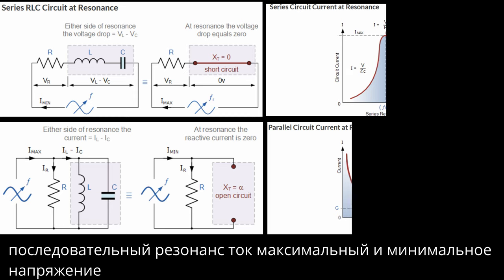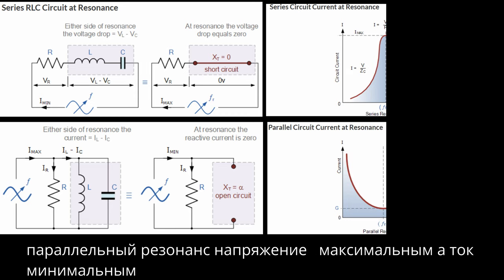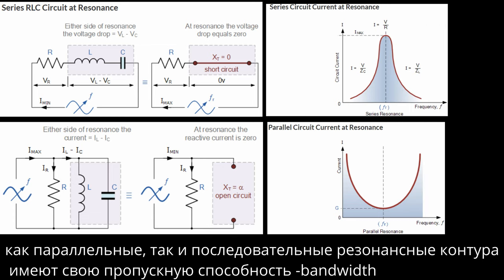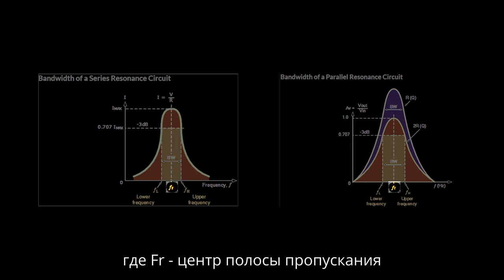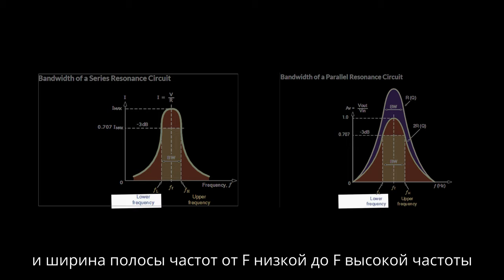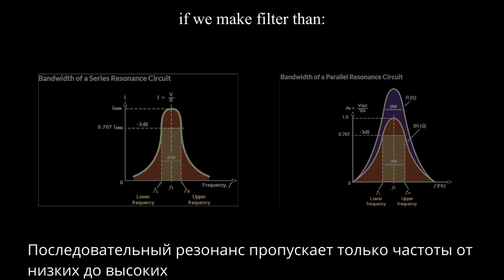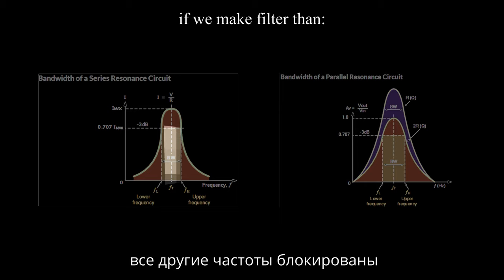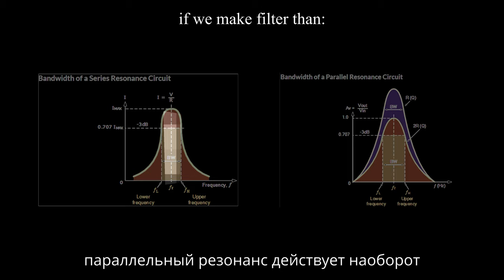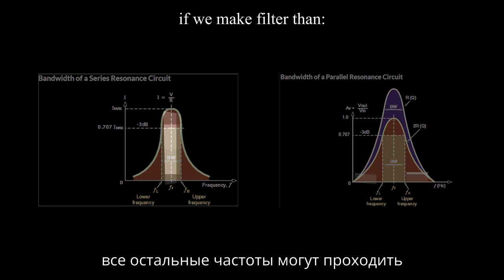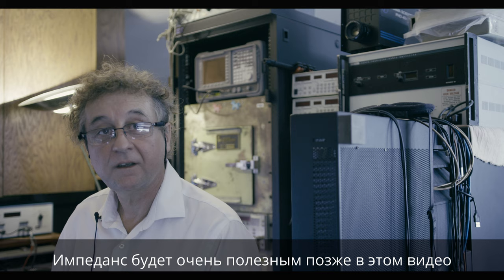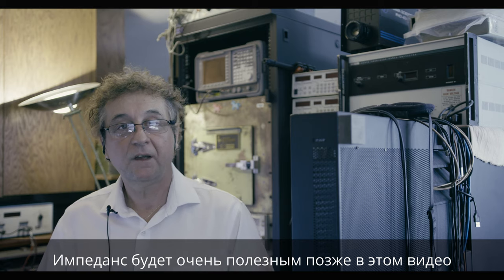Both parallel and series resonance circuits have their own bandwidth, where FR is the center of the bandwidth spanning from lower frequency F-low to upper frequency F-upper. A series resonance circuit allows only the frequencies between the lower and upper frequency to pass — all other frequencies are blocked. A parallel resonance circuit does the reverse: it allows all frequencies to pass except those between the lower and upper frequency. Impedance will be very useful later in this video.